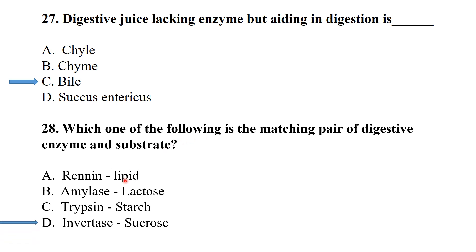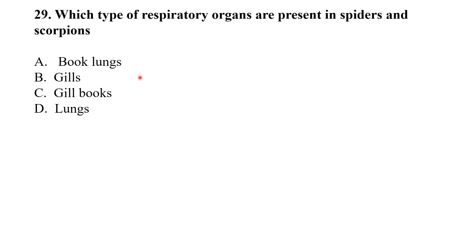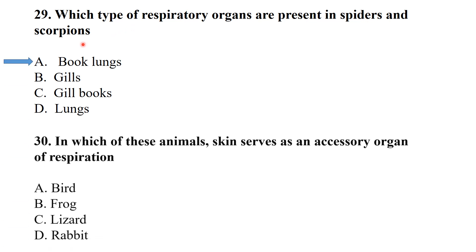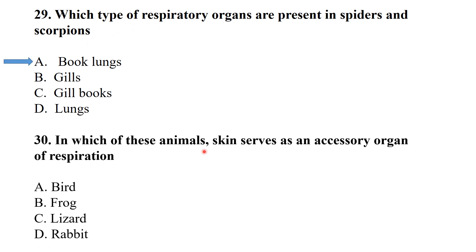Which one of the following is the matching pair of digestive enzyme and substrate? — It is invertase, which acts on sucrose. Which type of respiratory organs are present in spiders and scorpions? — Book lungs.